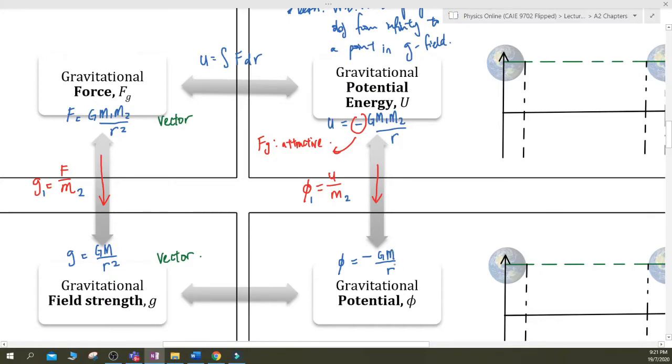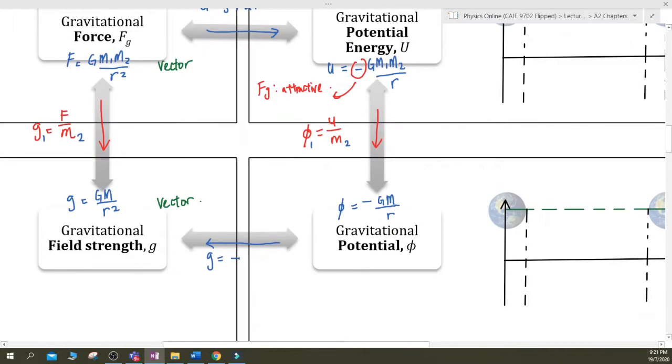Now this equation they give you, the potential equation they give you. Very nice, right? But if you know the relationship, you should easily be able to write out the other four. Another thing to note, sometimes they can ask you to explain why is it always negative. So I've gone through the explanation with you already.